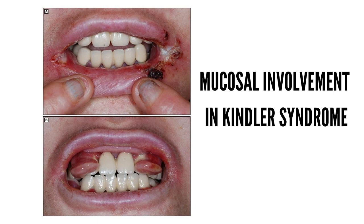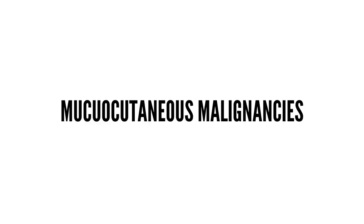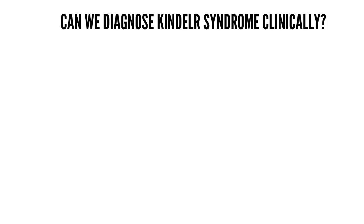Intestinal involvement has been reported in a few cases. Anal, urogenital, and ocular mucosa involvement is also common. Urethral stenosis can occur in males during childhood or later in life. Vaginal stenosis and effacement of the external female genitalia have been reported. Patients with ocular involvement may develop ectropion and recurrent keratoconjunctivitis resulting in symblepharon. Patients with Kindler syndrome have an increased risk of mucocutaneous squamous cell carcinoma, with the most frequently involved sites being the extremities, lips, and oral mucosa.